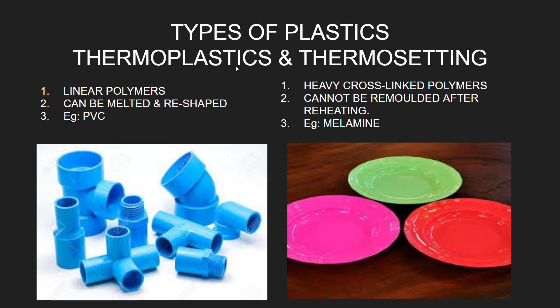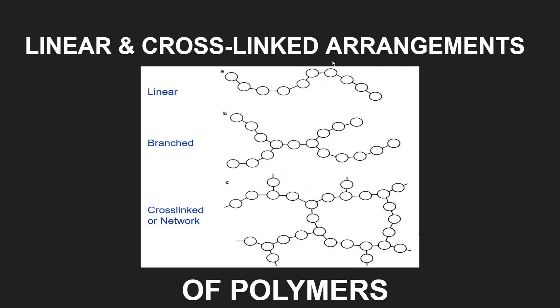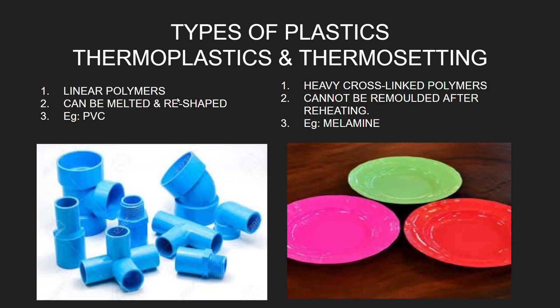Let's talk about thermoplastics. These are linear polymers — linear chain kind polymers. They can be melted and they can be reshaped. This is the chief characteristic. For example, these PVC pipes — we can always melt them and remold them in different shapes.